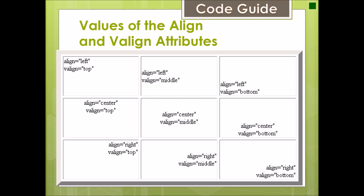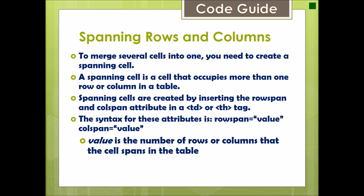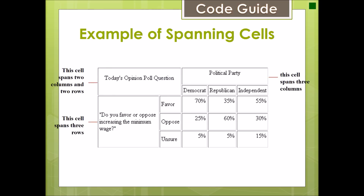Spanning rows and columns: to merge several cells into one, you need to create a spanning cell — a cell that occupies more than one row or column in a table. Spanning cells are created by inserting the rowspan and colspan attributes in a td or th tag. The syntax is rowspan equal to value or colspan equal to value, where value is the number of rows or columns that the cell spans.